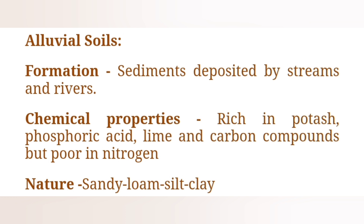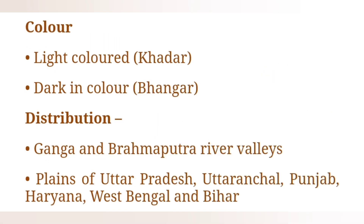Chemical properties of alluvial soil: rich in potassium, phosphorus, lime and carbon compounds, but poor in nitrogen. Nature: sandy loam to silty clay. Color: light colored to dark colored. Distribution: Ganga and Brahmaputra river valleys, plains of Uttar Pradesh, Uttaranchal, Punjab, Haryana, West Bengal and Bihar.